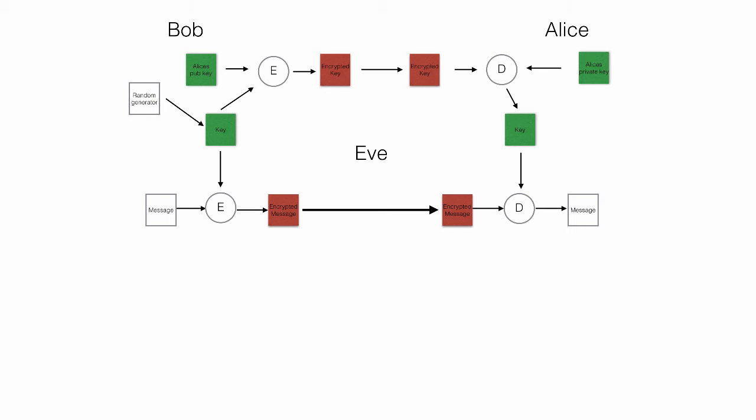But why didn't Bob just encrypt the recipe with Alice's public key in the first place? Why bother to create a random key, encrypt the recipe with that key, and then encrypt the encryption key with Alice's key and send that separately? The reason is that there is a big drawback with asymmetric encryption — the method where we encrypt with one key and decrypt with another. Even though this way of encryption is much more secure, it is thousands of times slower. So to encrypt lots of data we need to do symmetric encryption. Since the randomly generated key is small, Bob can easily encrypt that with asymmetric encryption.